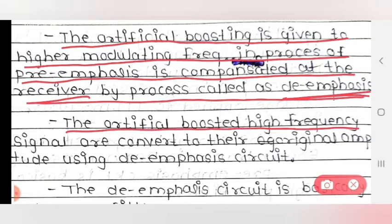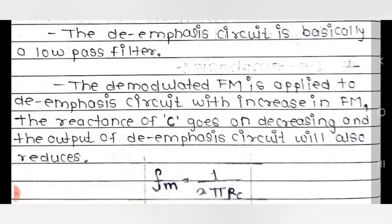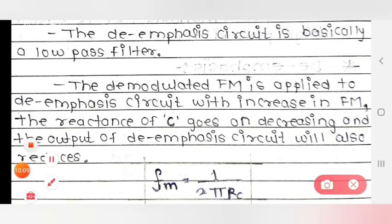The artificially boosted higher frequency signals are converted back to their original amplitude using the de-emphasis circuit. The de-emphasis circuit basically acts as a low pass filter, whereas the pre-emphasis circuit used a high pass filter — this is the key difference between the two.